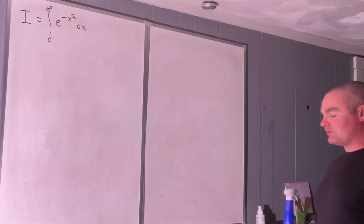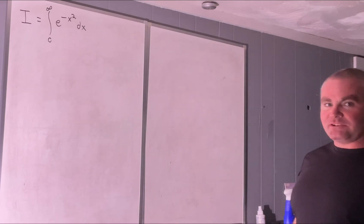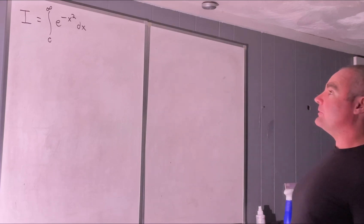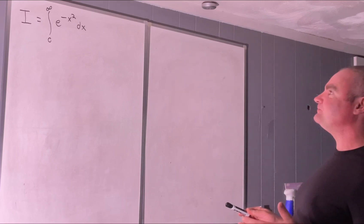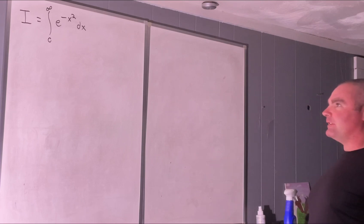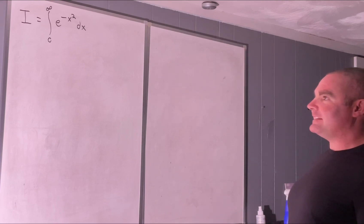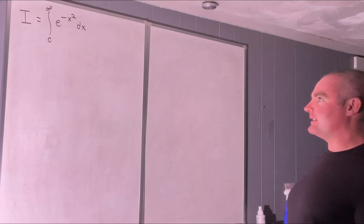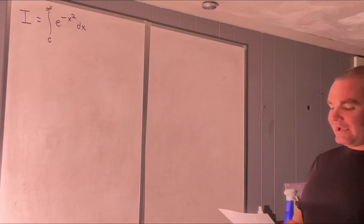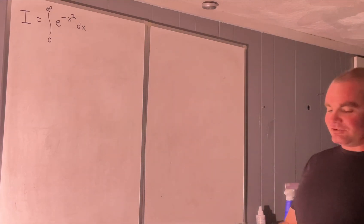Hi everybody, welcome back to my channel on Feynman integration. Today I'm going to be re-evaluating the Gaussian integral for two reasons. The first reason is that I've been featuring the result of the Gaussian integral a lot on the channel, so I figured I'd redo it. The second reason is that this way of doing it is a little bit different than the way I did it in my first video. They both use Feynman integration. The method I used before came from a paper by Keith Conrad of the University of Connecticut, and this one is by a fellow named Leo Goldmacher, and it's a paper titled 'Differentiation Under the Integral Sign.'